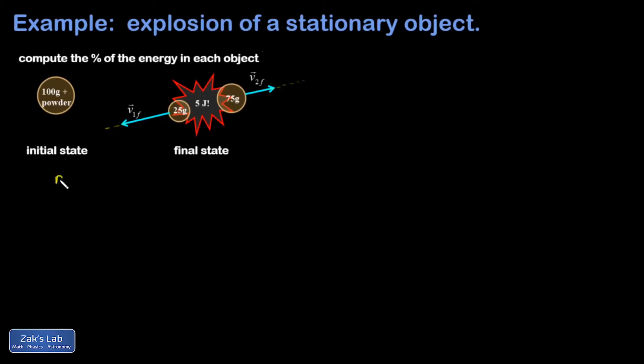And if momentum is conserved, so P initial equals P final, then my initial momentum is 0. And the momentum of the 25 gram mass will carry a minus sign. So I have negative, if I use SI units, 0.025 kilograms times the magnitude of V1 final.